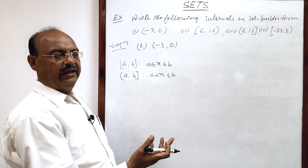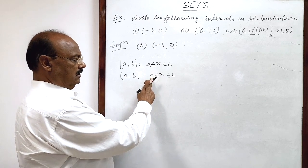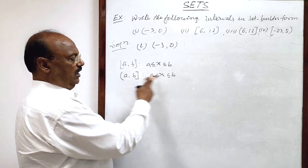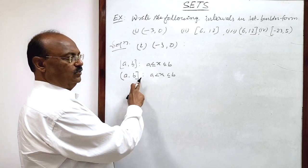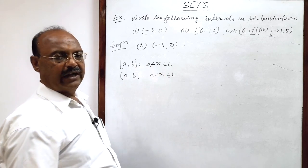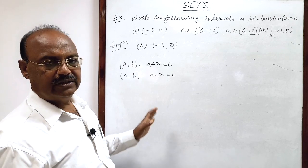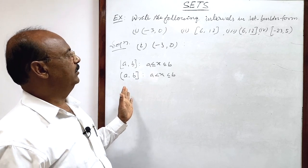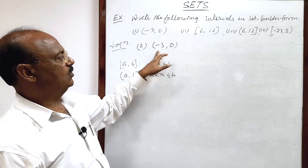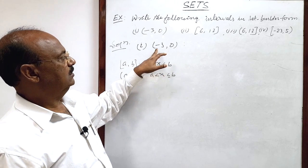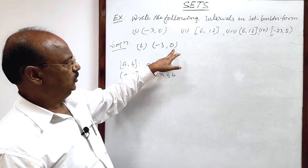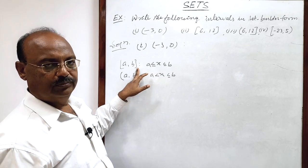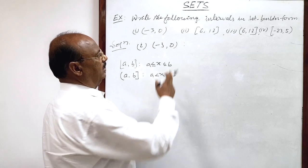Where there is only less than or only greater than, that side will be open. So here, x is greater than a — there is no equality sign — so this side is open, and smaller than or equal to b, so this side is closed. The side where equality sign exists, that side interval is closed, and where equality sign is not there, that side remains open. For open sides, we use small brackets, and for closed sides, we use big brackets.